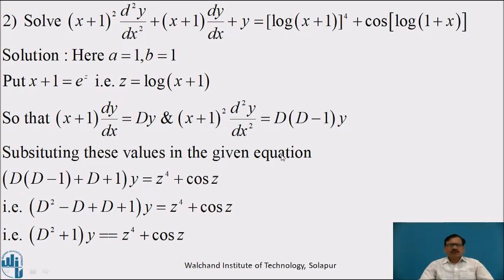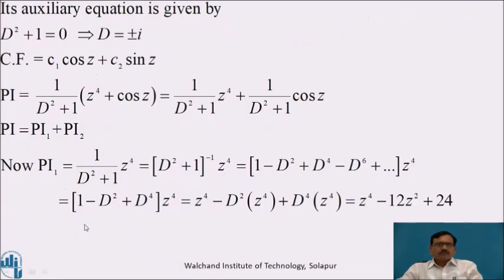Substituting these values in the given equation: [D(D-1) + D + 1]y = z⁴ + cos z. Simplifying: (D² - D + D + 1)y = z⁴ + cos z, that is (D² + 1)y = z⁴ + cos z. The auxiliary equation is D² + 1 = 0, giving D = ±i. Both roots are imaginary, so CF = c₁cos z + c₂sin z.